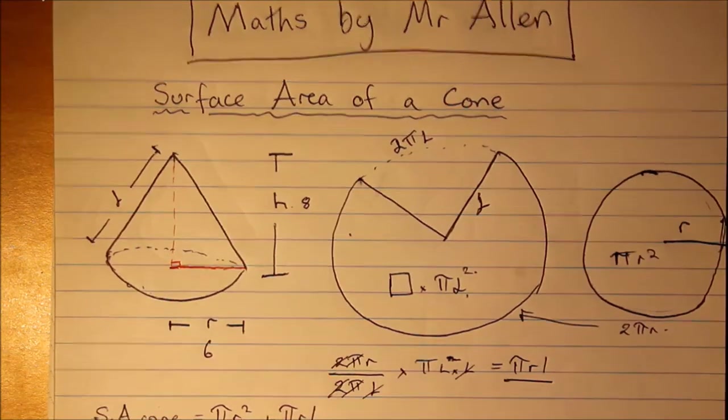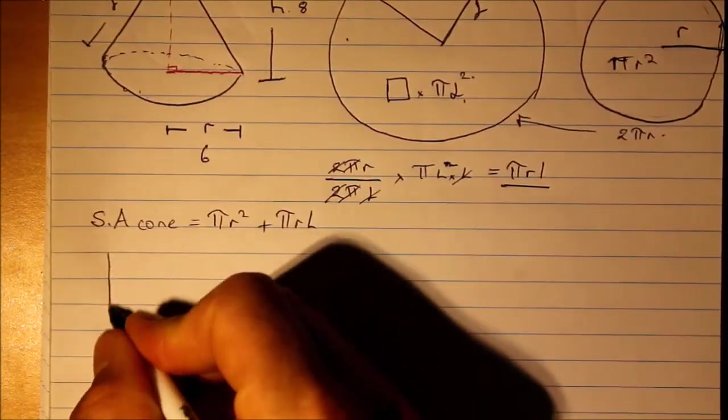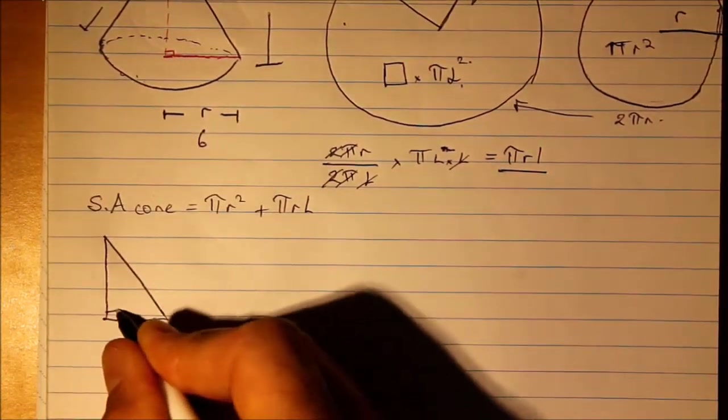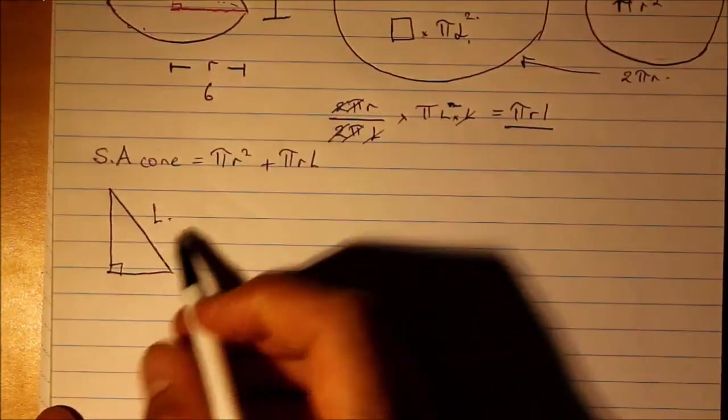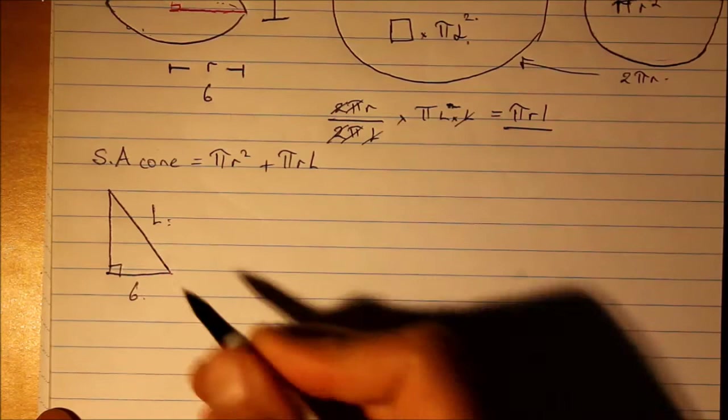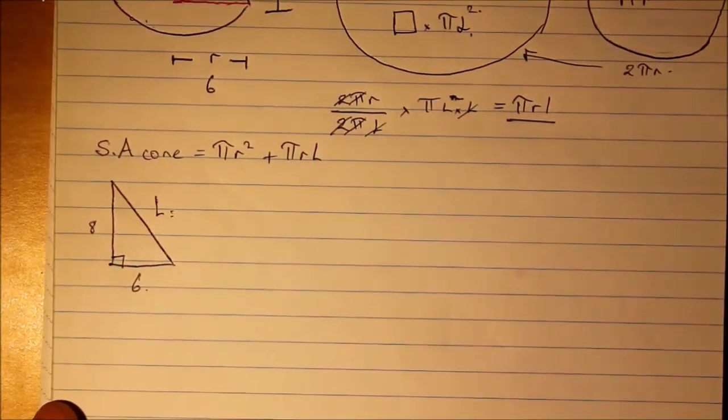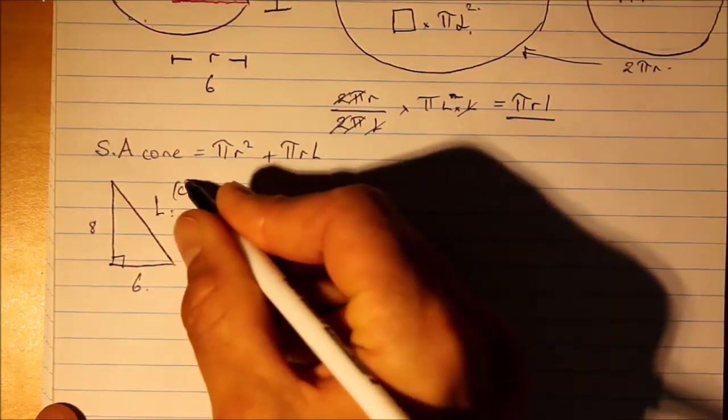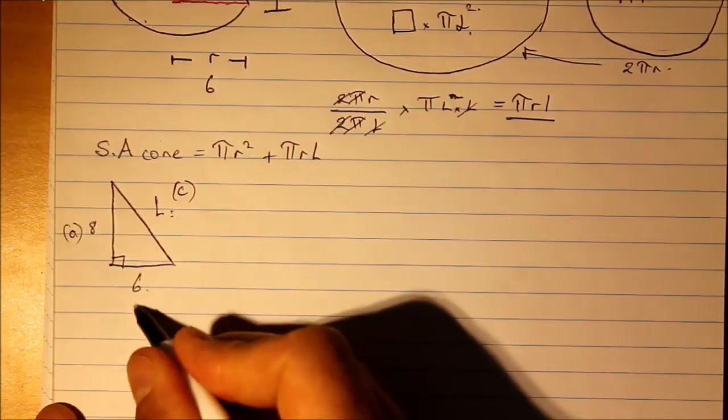So it just becomes a Pythagorean problem. You can draw your triangle out. We'll say l is that slant height, r in this case was the radius 6, and the height perpendicular height was given to us as 8.